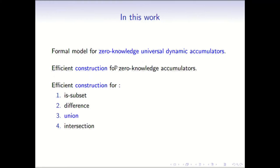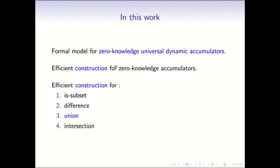This is where we come in. The main contribution of our work is first formally modeling what it means for a zero-knowledge universal dynamic accumulator — meaning adding a privacy property to accumulators so that the proofs of membership and non-membership leave no information beyond that answer. Then we give an efficient construction for zero-knowledge accumulators, which we will see in this talk. Finally, we extend this to give efficient constructions for the entire set algebra, but I will only be focusing on union for this talk.